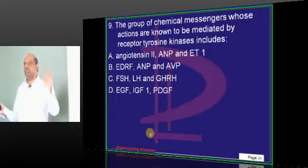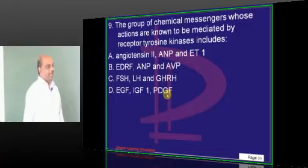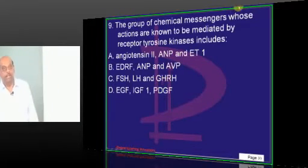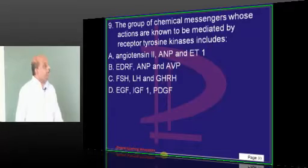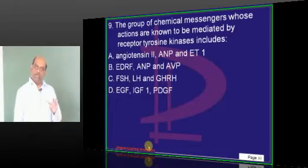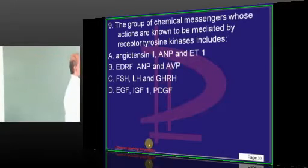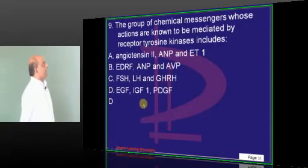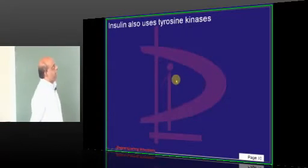One question on secondary messengers — without that, there is no exam paper. Insulin, epidermal growth factor, insulin-like growth factor, and platelet-derived growth factor all use tyrosine kinase as their secondary messenger. The answer is D — tyrosine kinase. This is a classic question.